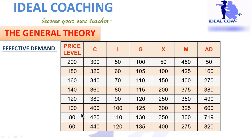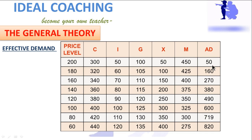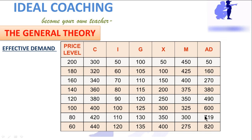Let us understand with this table. The price levels are increasing from 60, 80, 100, 120, 140, 160, 180, 200. And the aggregate demand is decreasing from 820, 719, 600, 490, 380, 270, 160, 50. When prices are rising, there is demand, but every kind of demand is not effective demand. There is some point in all this aggregate demand where the effective demand is, and that is being targeted by Keynes. He said only that level of demand is effective which is fully met with the forthcoming supply of that entrepreneur, neither having the tendency to reduce nor to expand production.